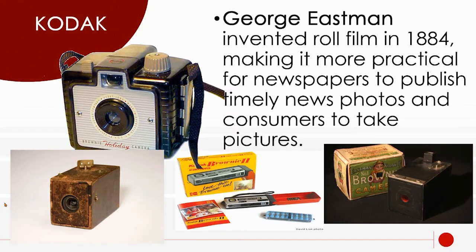In 1884, George Eastman started the Eastman Kodak Company and invented the idea of rolling film up into a canister so that we could take photos more easily. This made it much more practical for newspapers to use photographs and for regular people — consumer cameras meant people were able to take photos themselves without going to an expensive portrait artist.